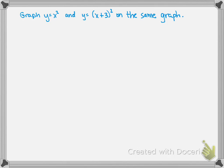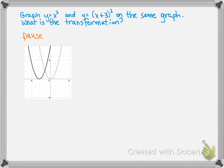Graph y equals x squared and y equals (x plus 3) squared on the same graph. What is the transformation? Pause while you try to do both these graphs and state the transformation, then play again to check your answers. The parent function y equals x squared is in red, y equals (x plus 3) squared is in black. y equals x squared is translated 3 units left — that's the transformation.